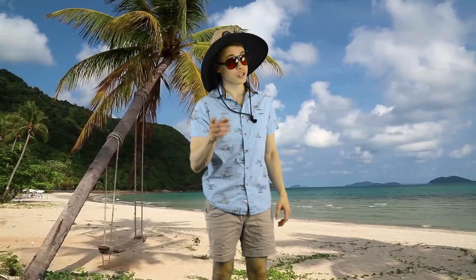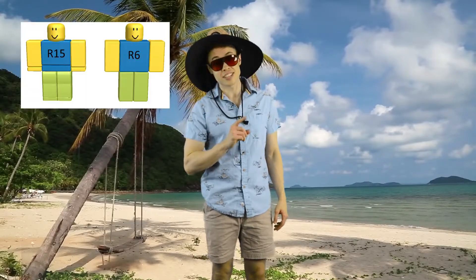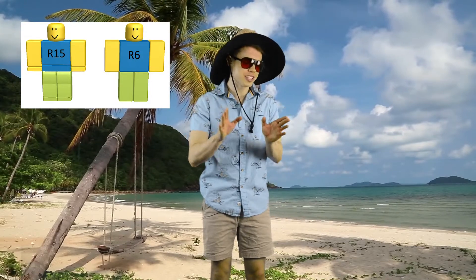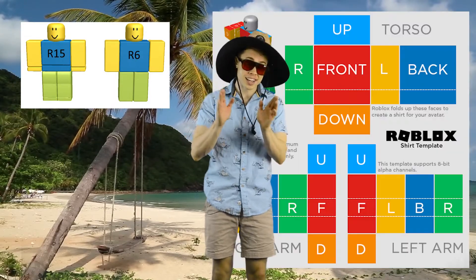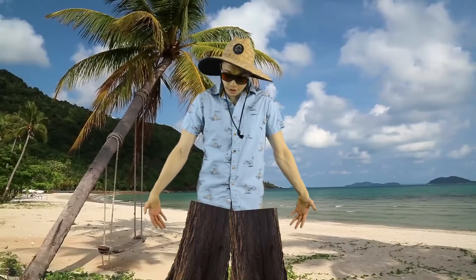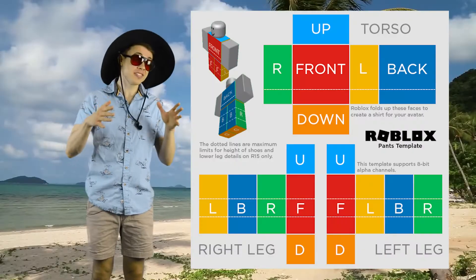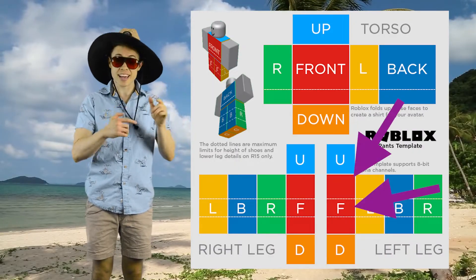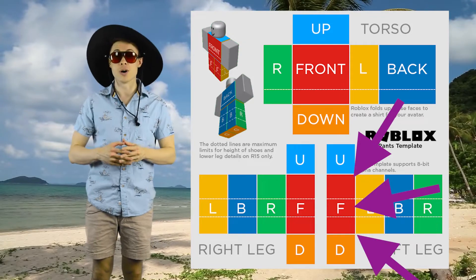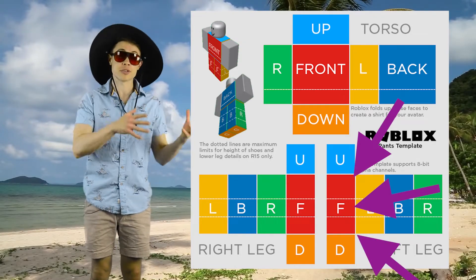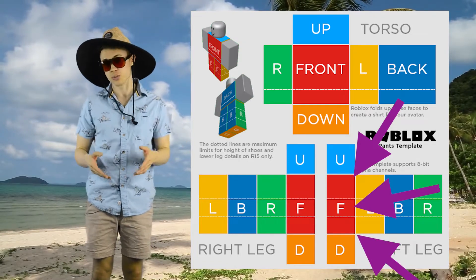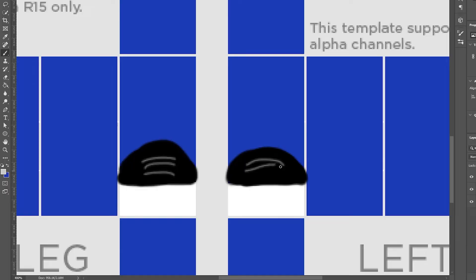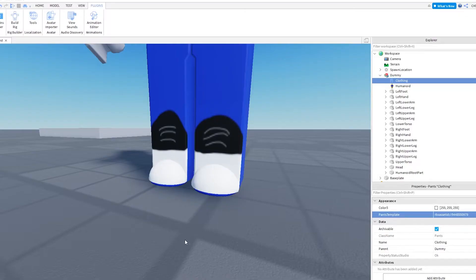If you want your clothing to look good on an R15 character, make sure you pay careful attention to those dotted lines in the template. If you have an R6 character with tree trunk legs, it doesn't matter. But for an R15 character, those dotted lines show you where the upper leg, lower leg, and feet are going to go on the image for the pants, and there's a similar setup for shirts as well. If you're not careful with this, things can get messy.